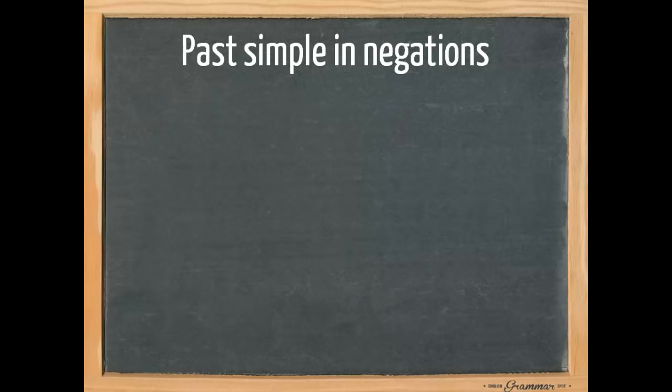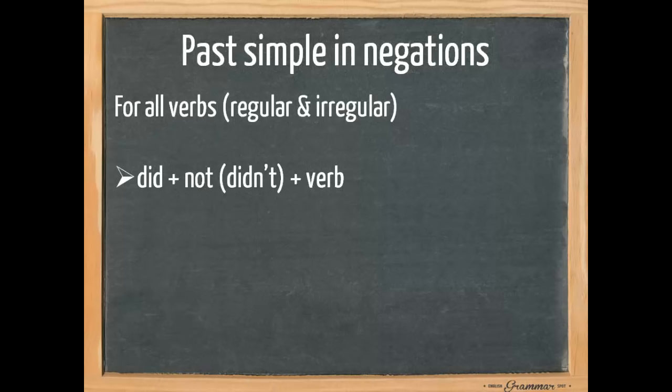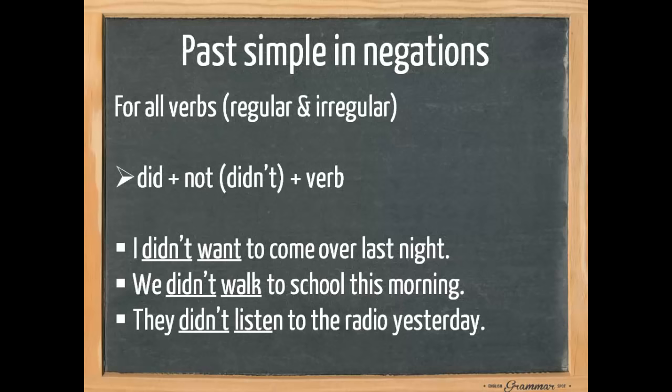For the past simple in negations, regular and irregular, we also use the past simple tense of the auxiliary verb to do, which is did and we add not to it, contracting it into didn't plus the infinitive form of the verb. I didn't want to come over last night. We didn't walk to school this morning and they didn't listen to the radio yesterday.